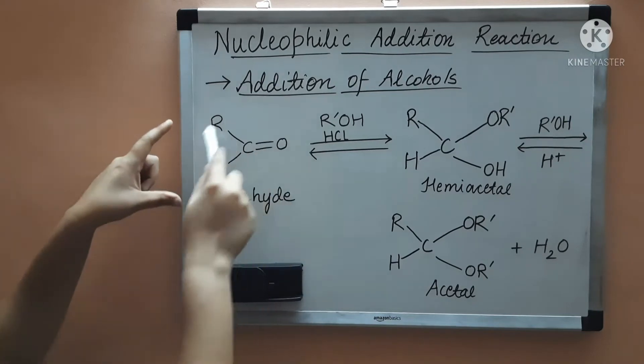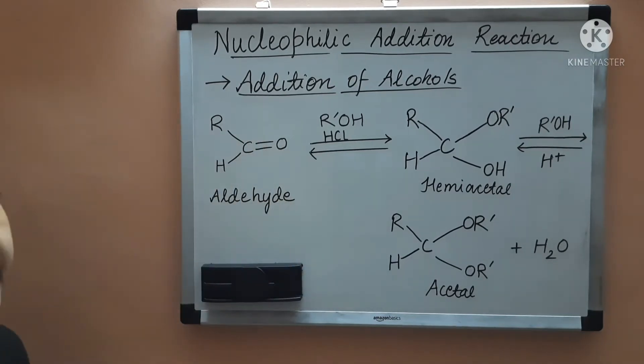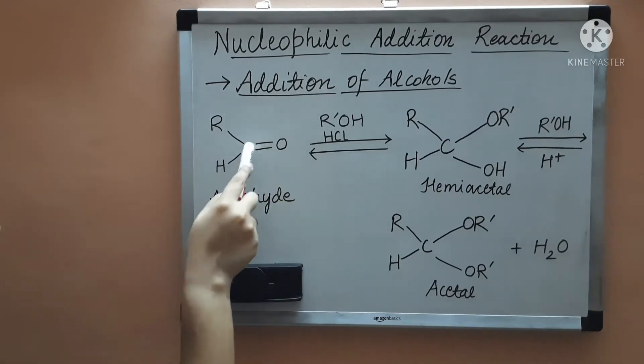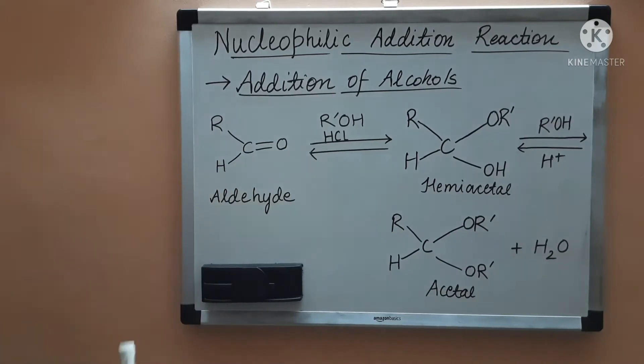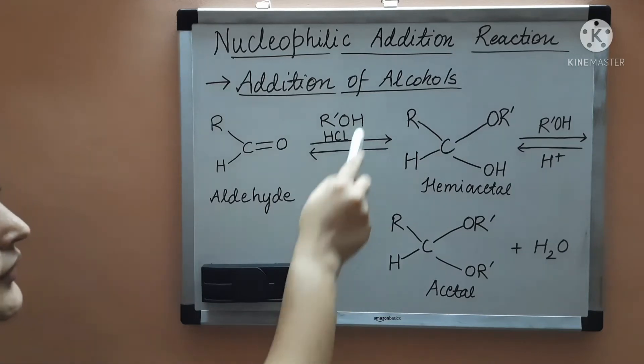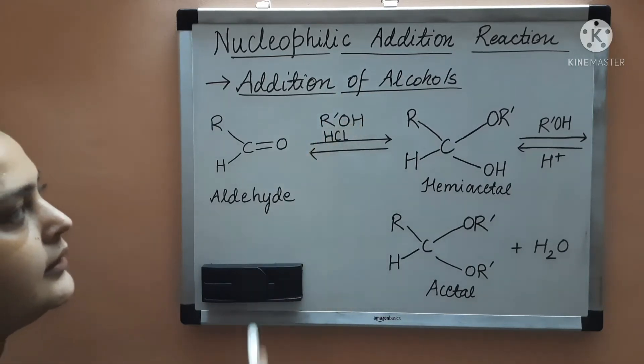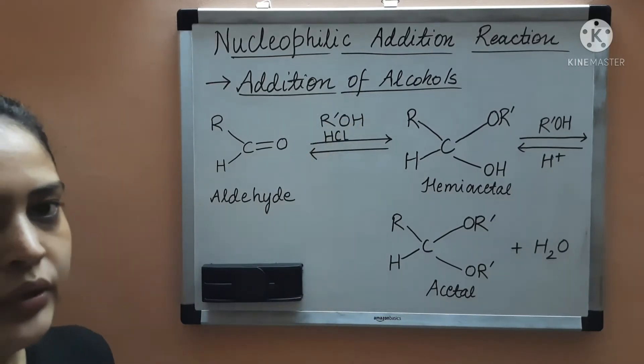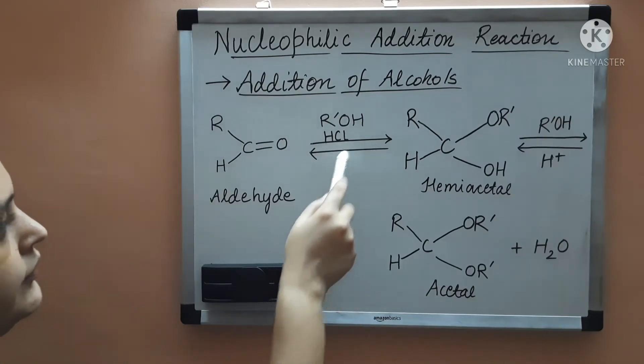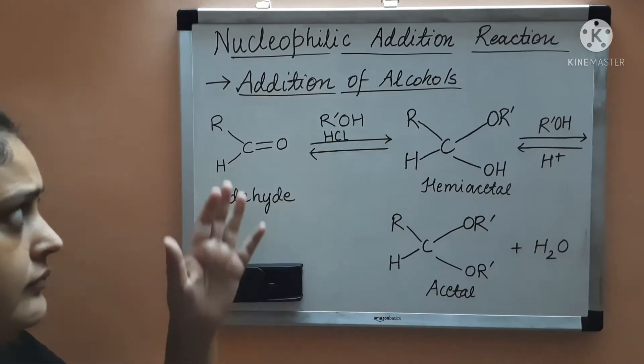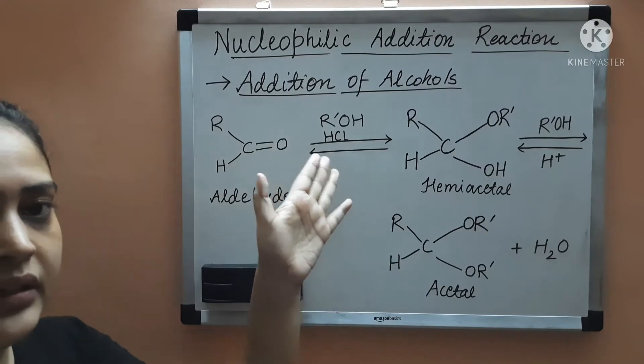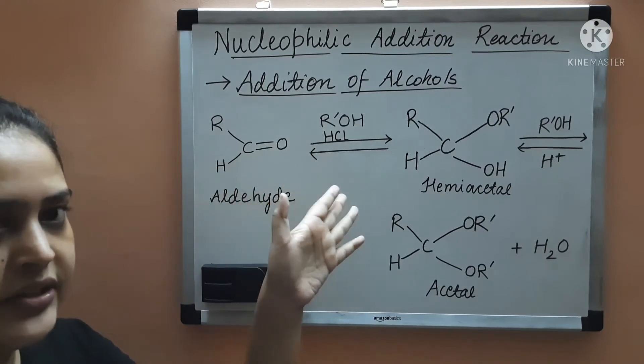This is an aldehyde. We are taking first the aldehyde, so R-C=O-H. This is our aldehyde and we are adding monohydric alcohol to it. Monohydric alcohol means that alcohol which contains one OH group, and then we are adding HCl. So HCl we are taking in gaseous form.